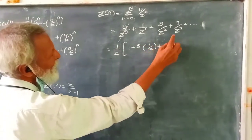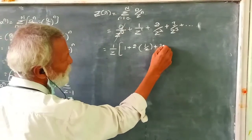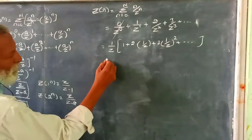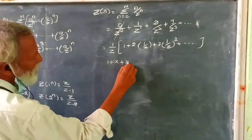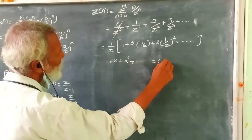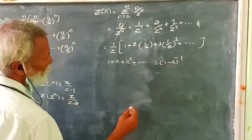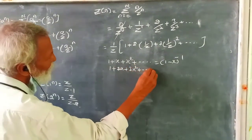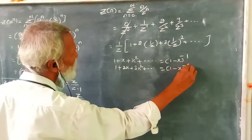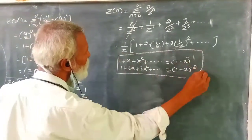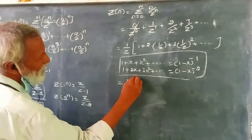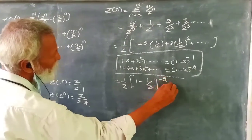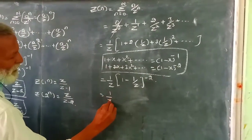This equals 1/z(1 + 2x + 3x² + ...) which equals 1/z times (1-x)^(-2). Therefore, 1/z times (z/(z-1))^(-2).